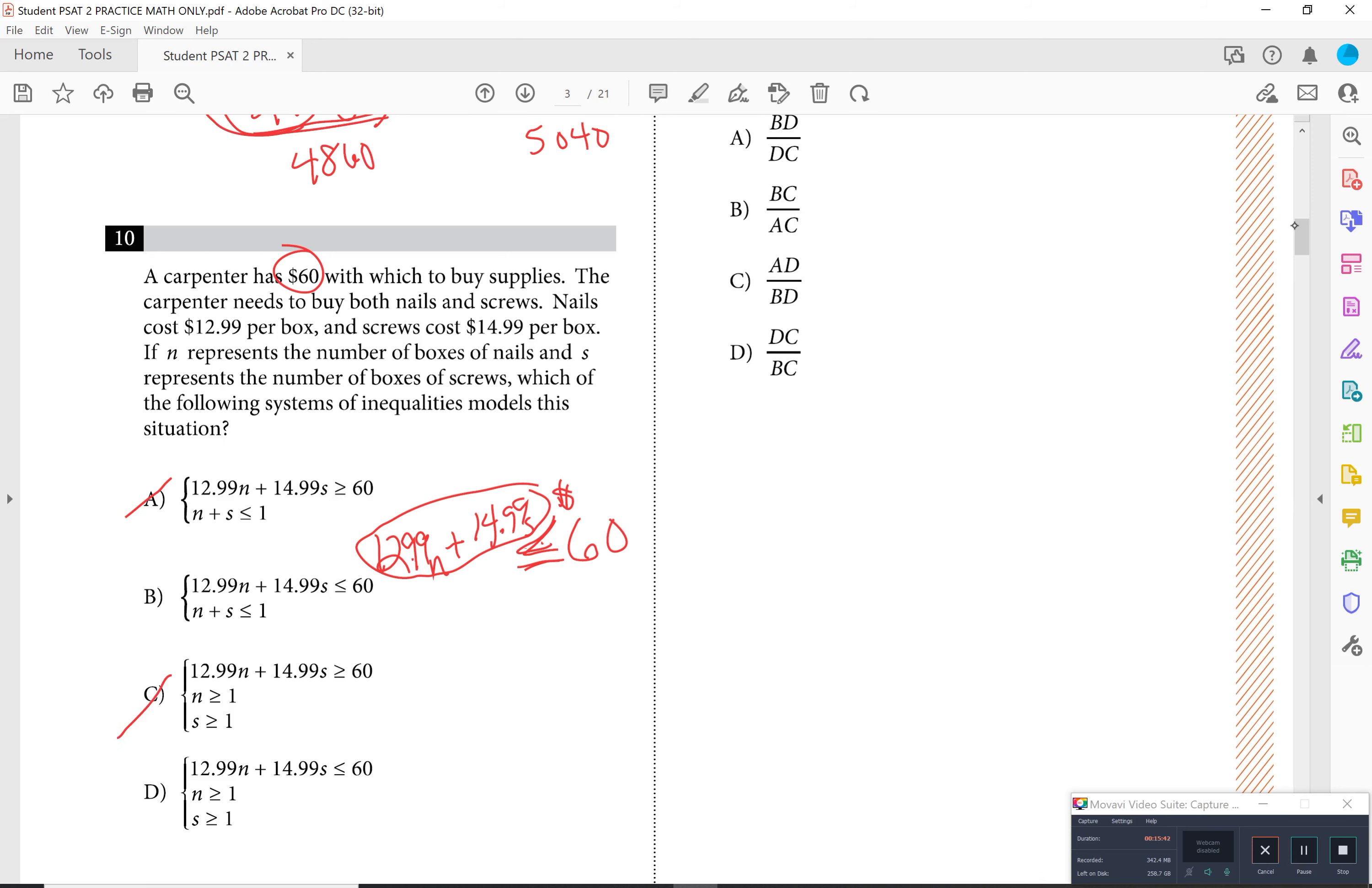Now, they're not saying that you're going to buy nails and screws and it has to be less than or equal to one because they did not make a mention of that. They did say that we're going to buy multiples of these, so possibly. And so it would have to be answer choice D.